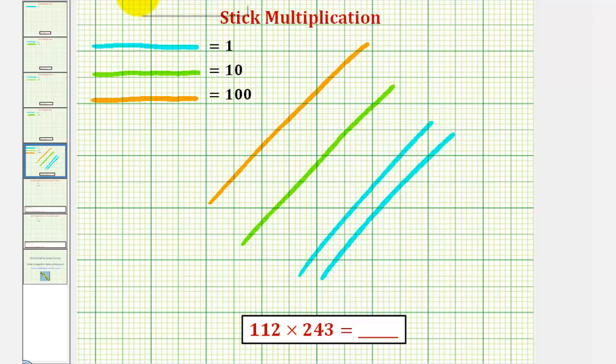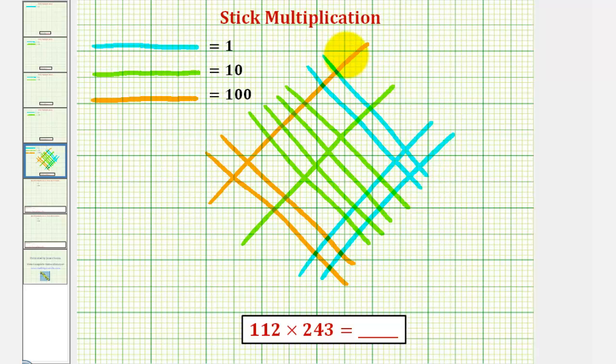Now we'll represent 243 in a different direction, so we'll start with two orange sticks, so there's 100 plus 100 or 200. We need four green sticks for 40, so one, two, three, four, that's 240. We have a three in the ones place value, so we need three blue sticks, one, two, and three.